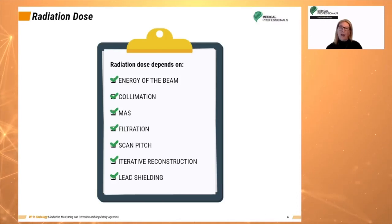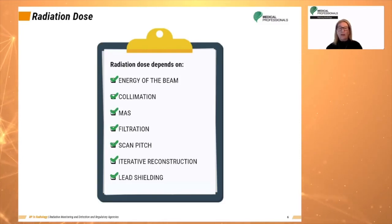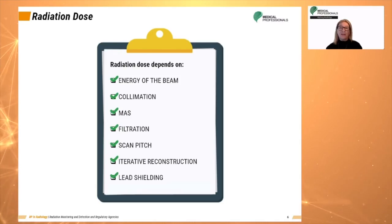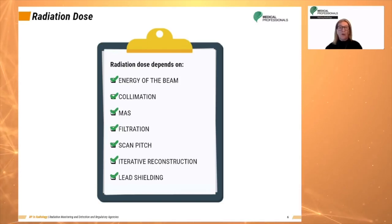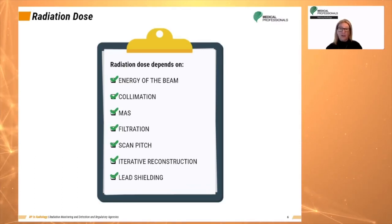The pitch is the way in which the continuous spiral of the scan is stretched out or compressed. It is defined as the ratio of the scan table increment, otherwise known as BI or bed index, per 360 degrees of x-ray tube rotation to the slice thickness or slice width. When the pitch ratio is higher, patient dose is reduced.